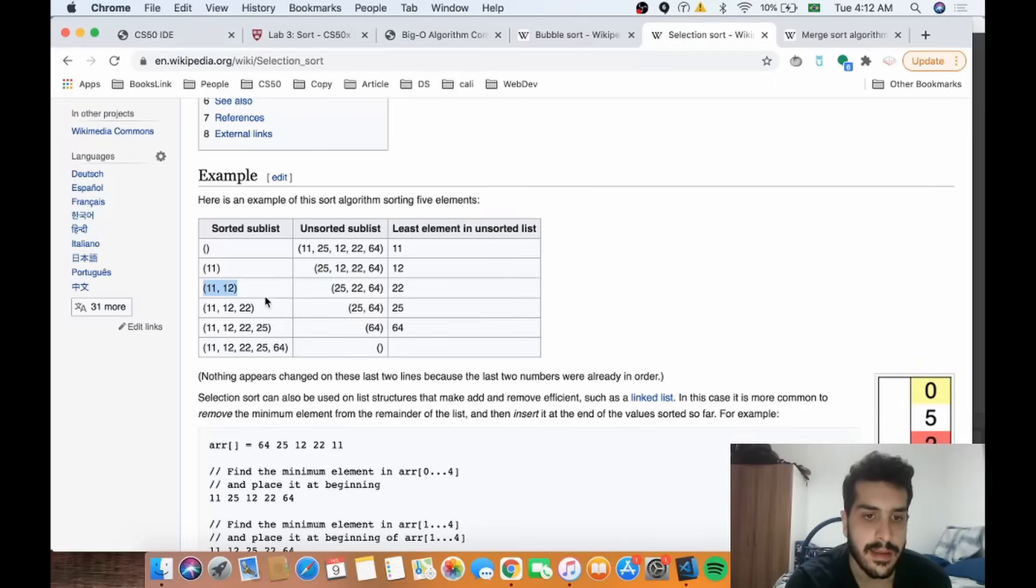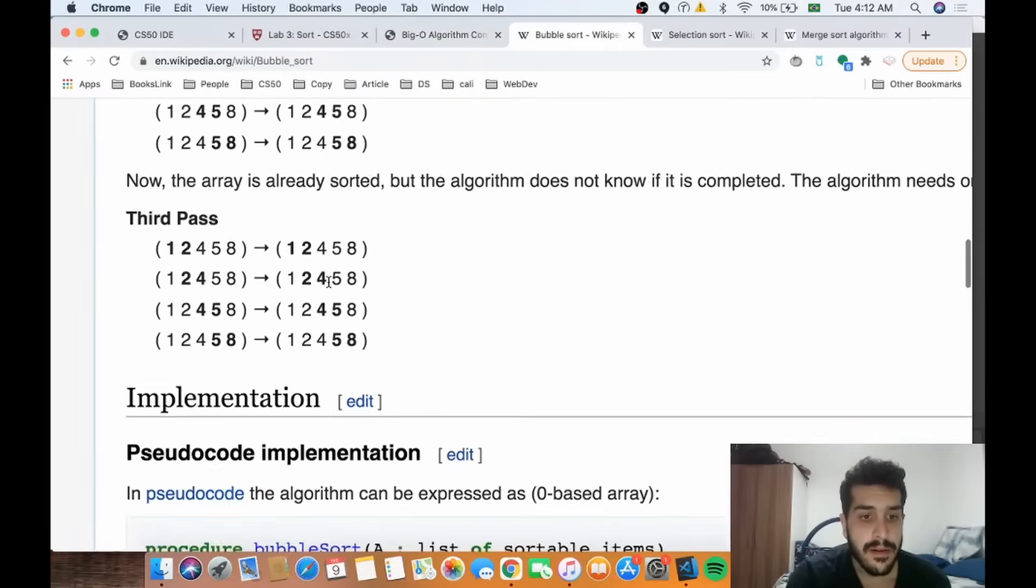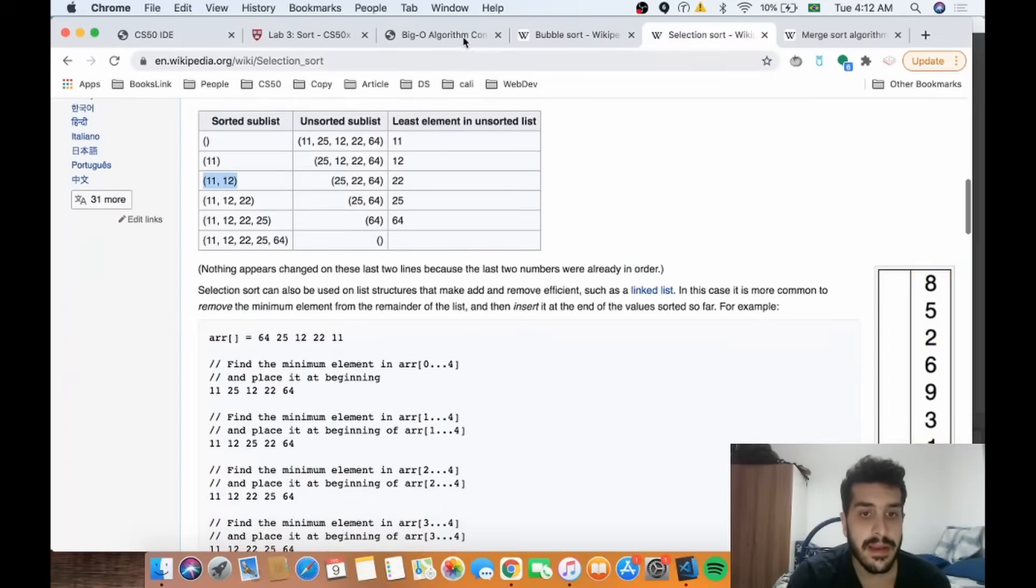So then we look at the smallest value of the remaining values, that's 12, and place that on the sorted list. The difference is both of them are O(n²) in the worst case scenario, but selection sort is O(n²) also in the best scenario because we always have to - the function or the for loop that looks for the minimum value, we always have to look from start to end.